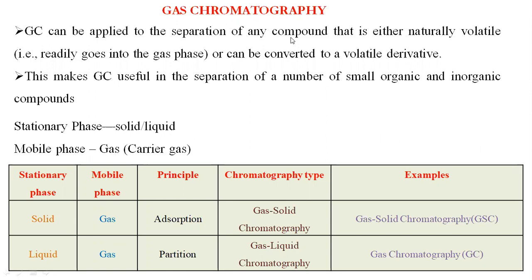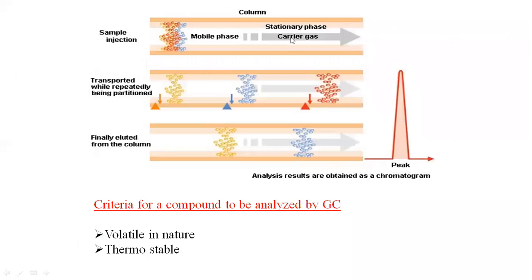Partition means the distribution of a sample or compound between two immiscible liquids. So when we inject a sample into the stationary phase, along with the mobile phase, the compound travels through the stationary phase. Depending upon the affinity between the stationary phase and the analyte, different analytes are separated with different affinities.